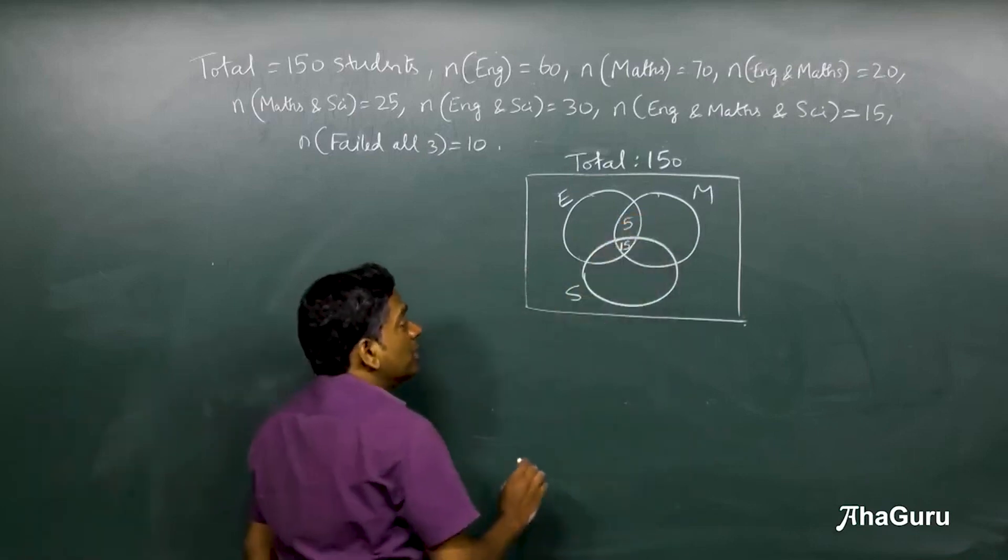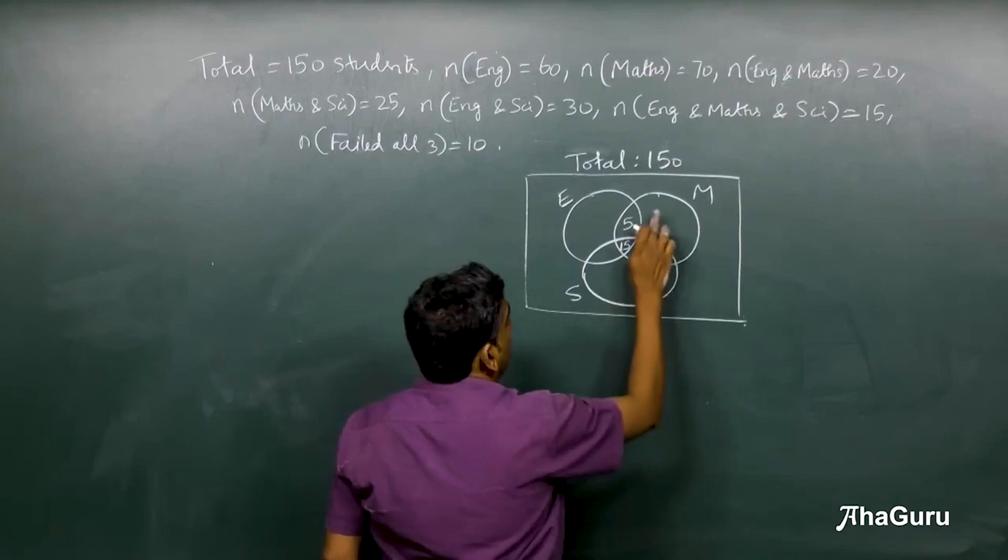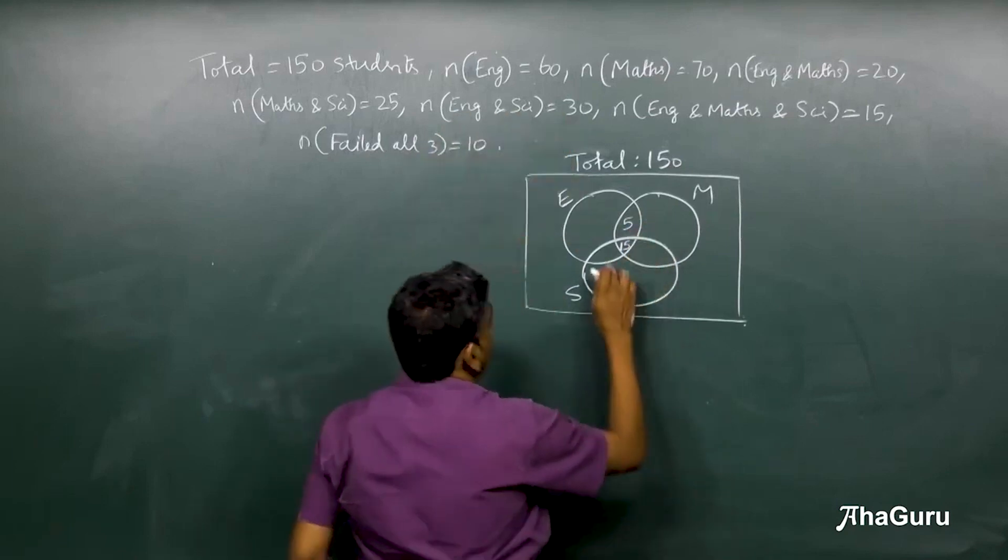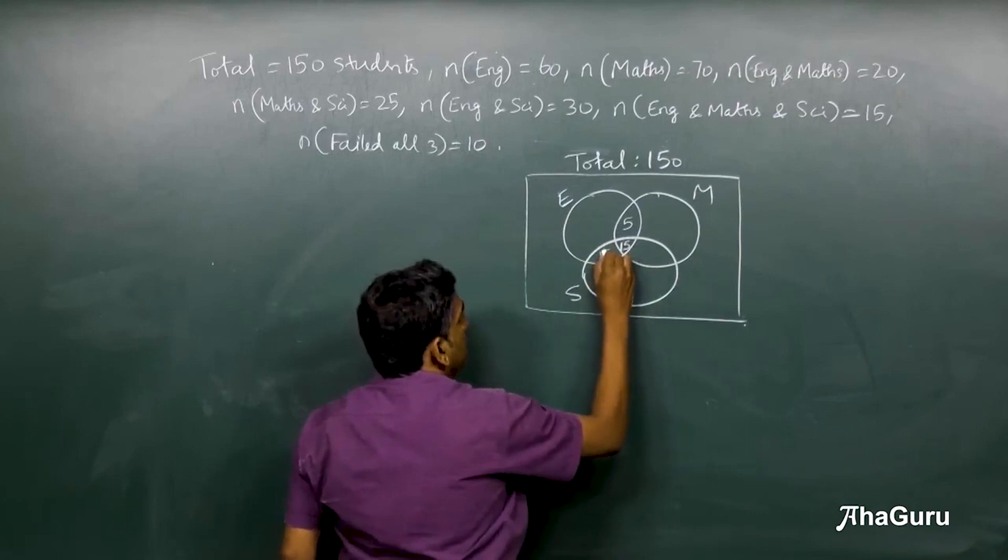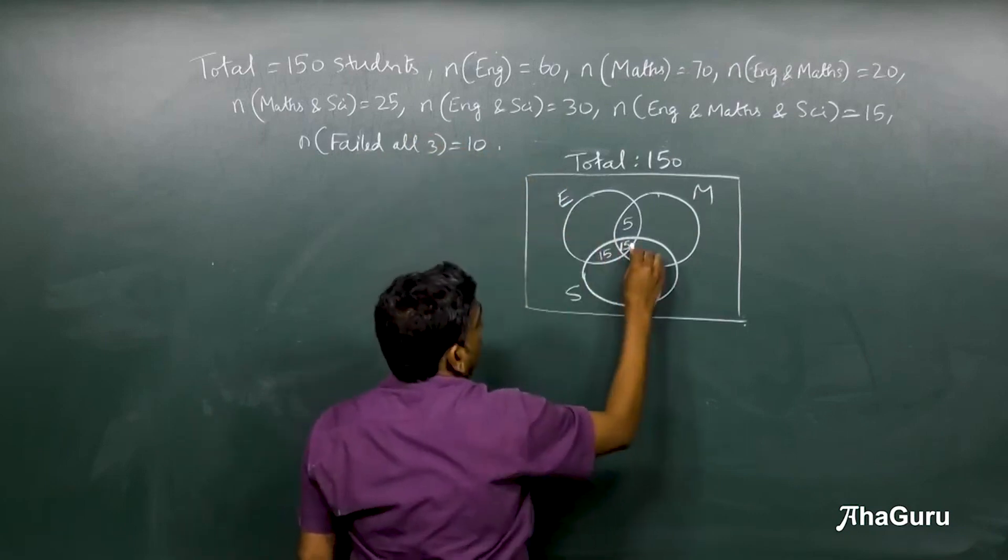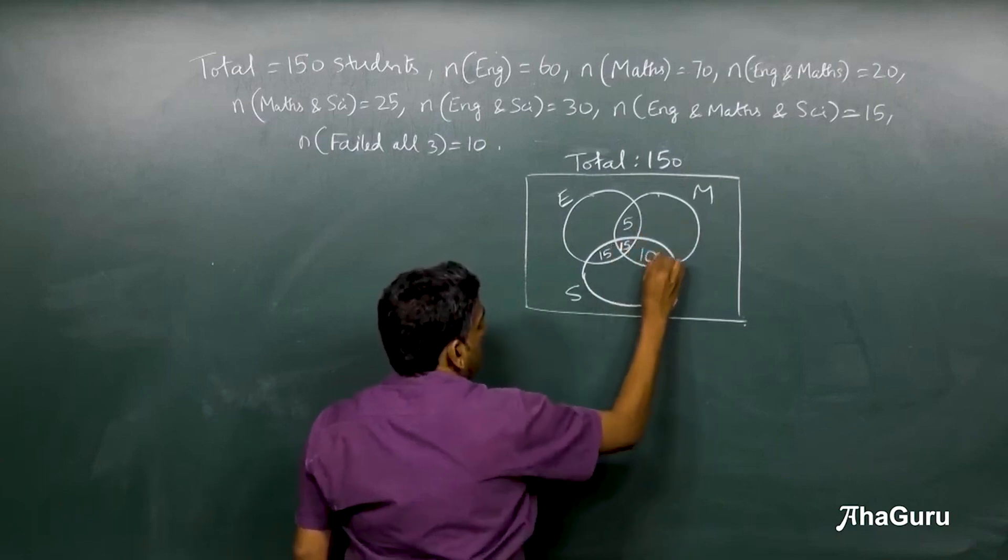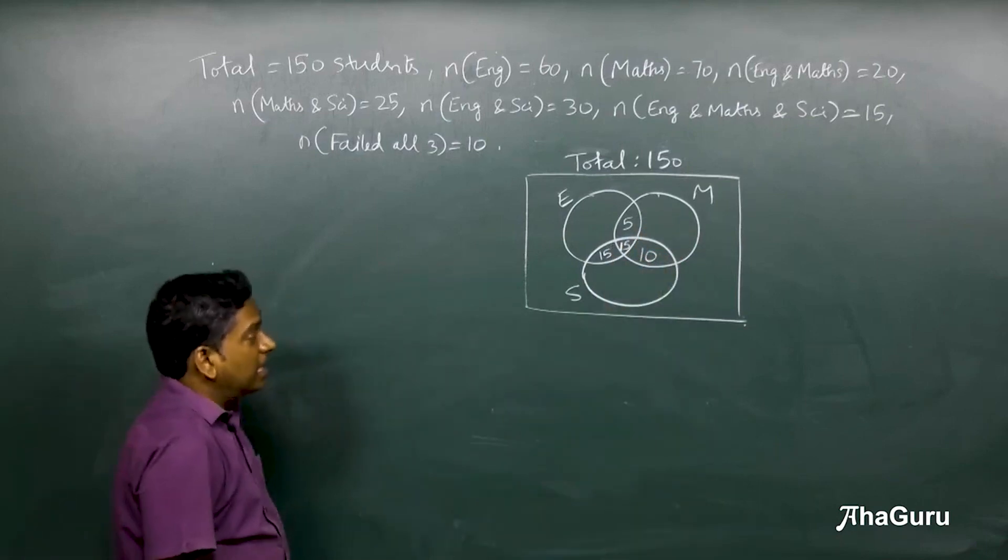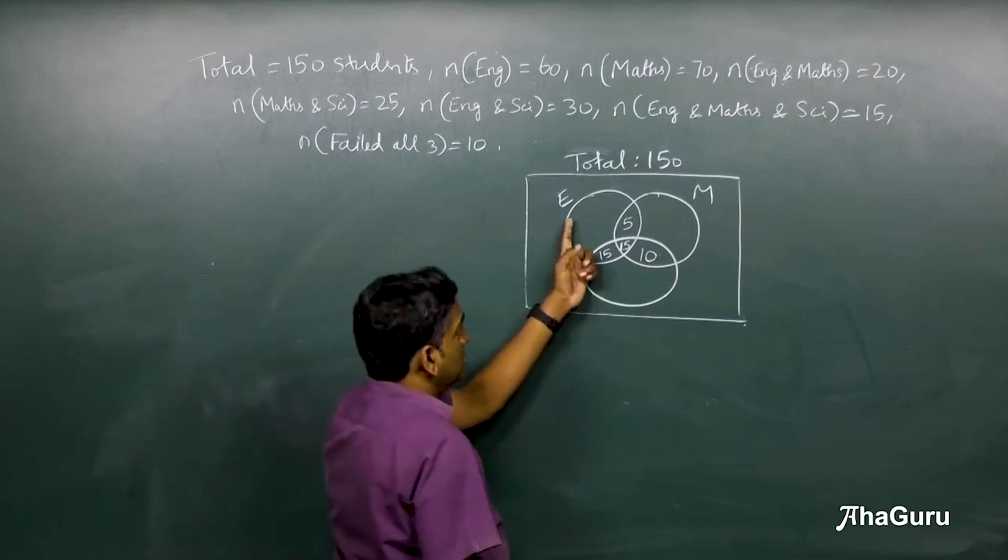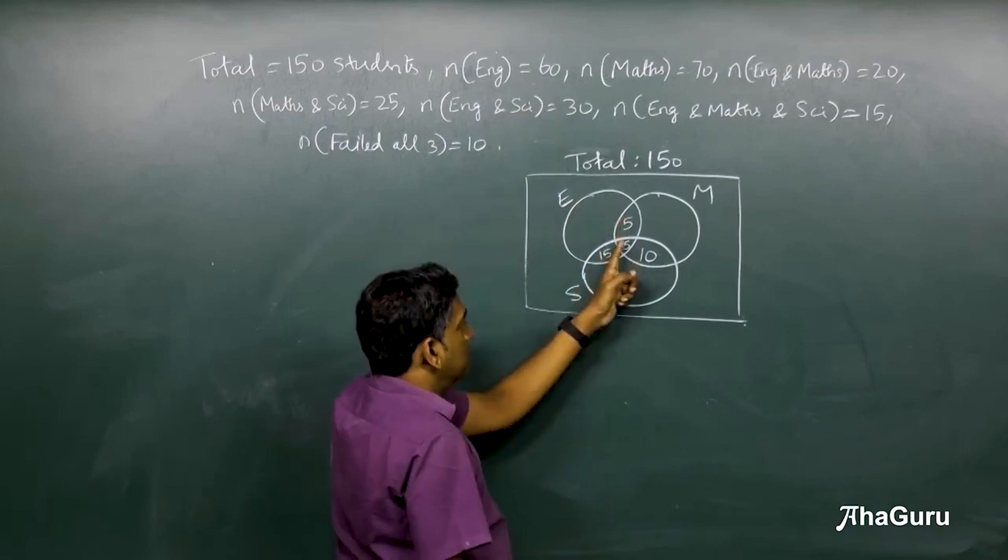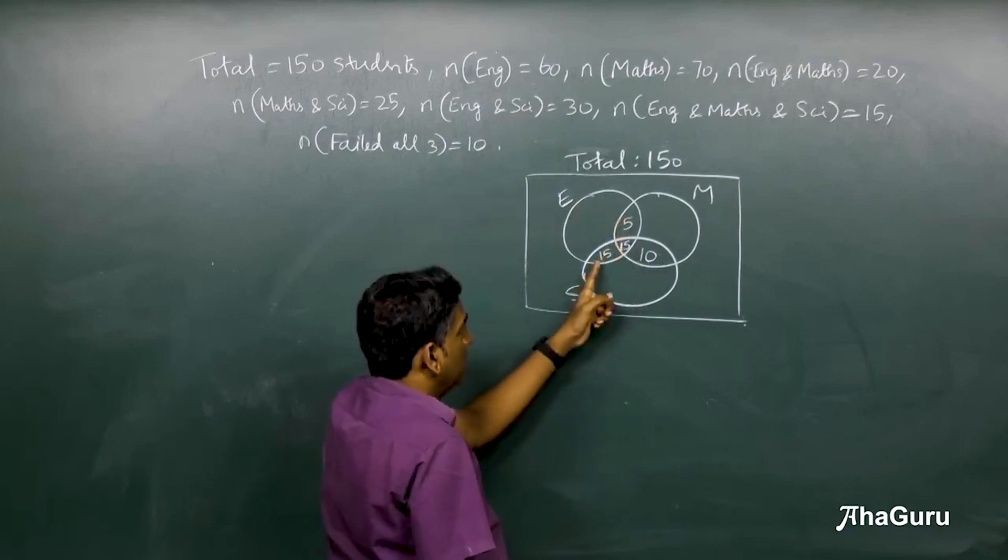Now similarly we can fill the other smaller boxes. English and Science is 30. This is already 15, so this must be 15. Math and Science is 25. This is 15, so this is 10.